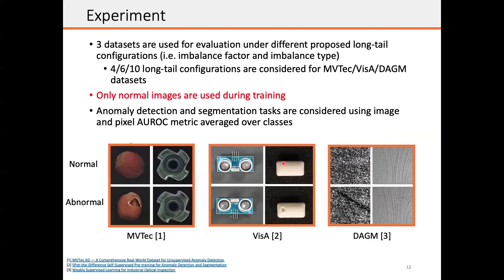For experiments, we consider three datasets with different long-tail configurations. As shown below, these datasets contain different objects and textures with or without defects. We follow the standard settings and only use the normal images during training, which means that the model never sees the abnormal images during training. The AUROC metric is used for the anomaly detection and also the segmentation task.